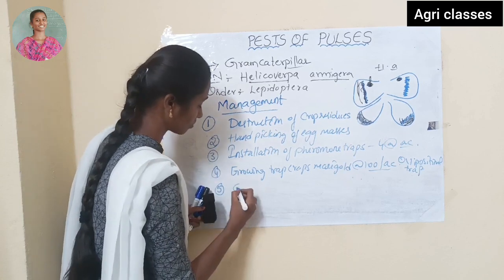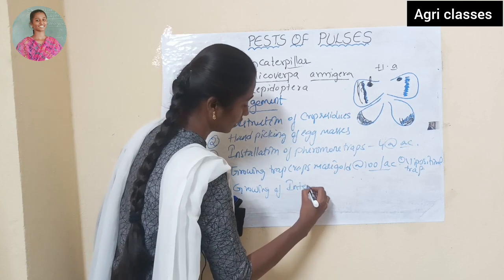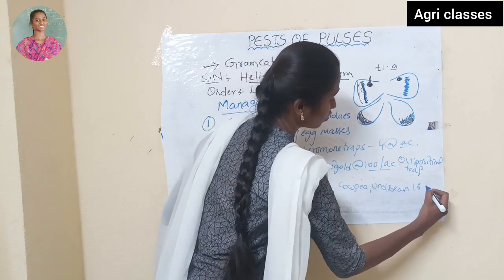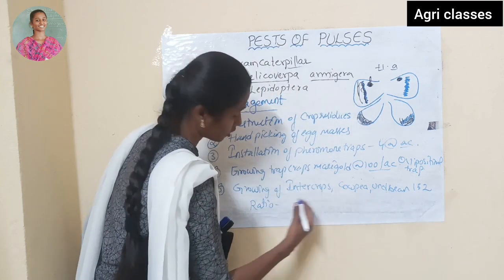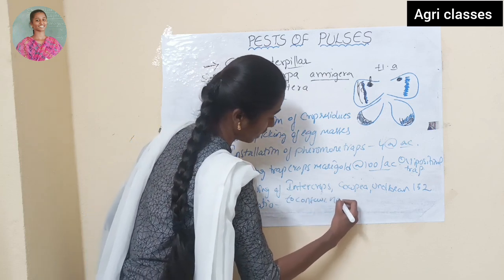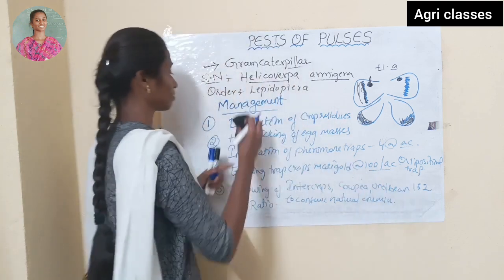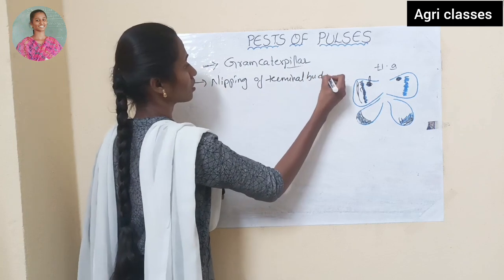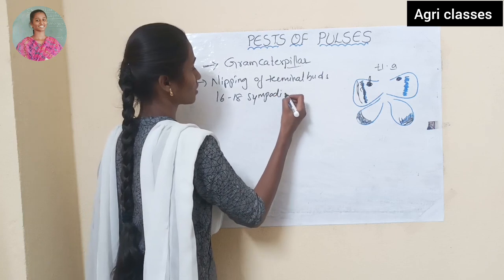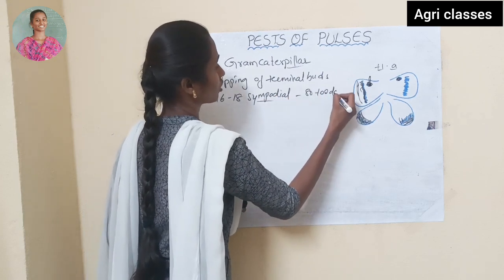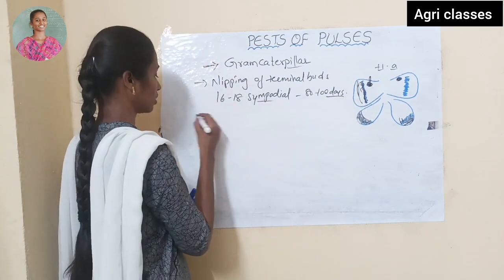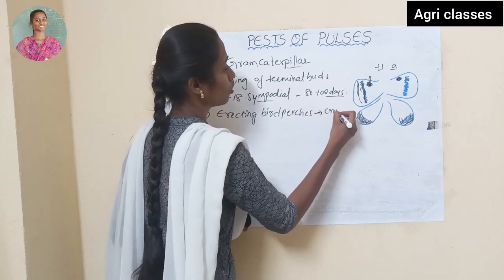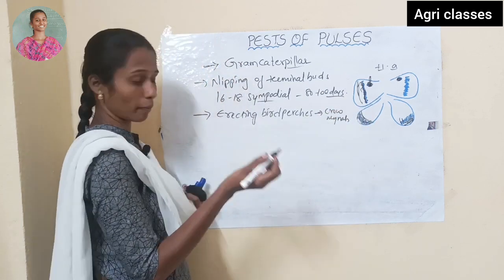Growing of inter crops like cowpea and urd bean in a 1:2 ratio to conserve natural enemies. Then nipping of terminal buds when there are 16 to 18 nodes, and before 80 to 100 days of crop growth, to avoid oviposition. Then erecting bird perches to attract birds like crow and myna — they will eat the caterpillars and control the pest.